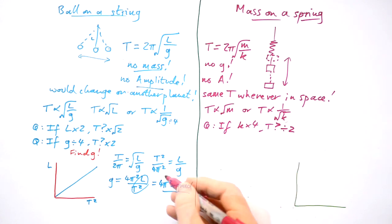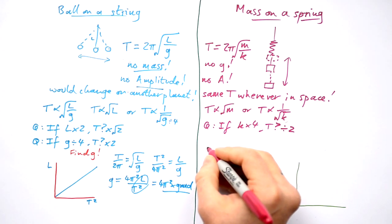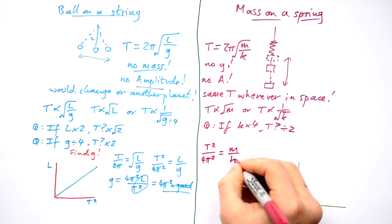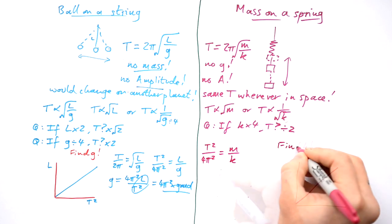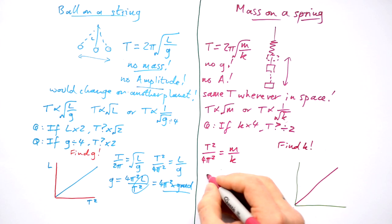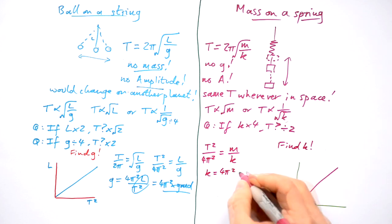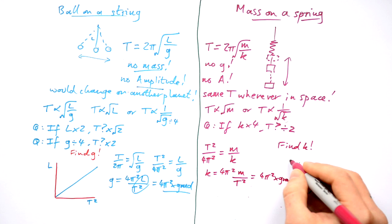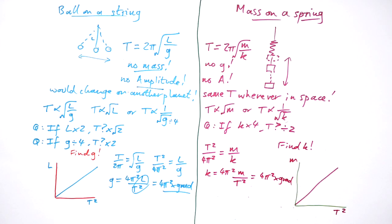What about the other side? And very similar to over here, we end up with T² over 4π² equals M over K. In this case, if I want to find out K, this is rearranging this. I end up with K equals 4π² times the mass over T². It's going to give you 4π² times the gradient. So what are we going to put? I'm going to put the mass here and I'm going to put the time period squared down here.